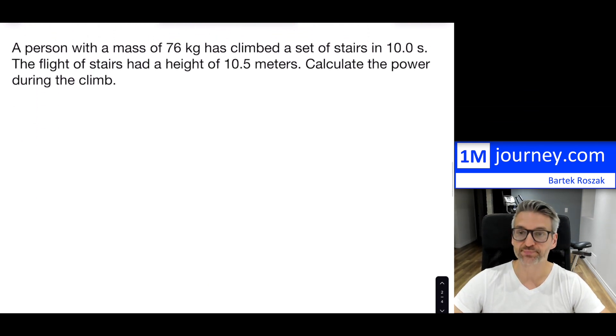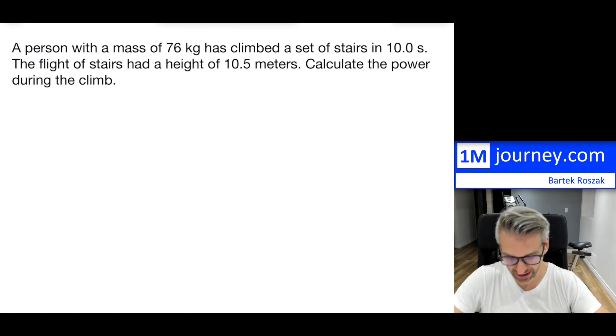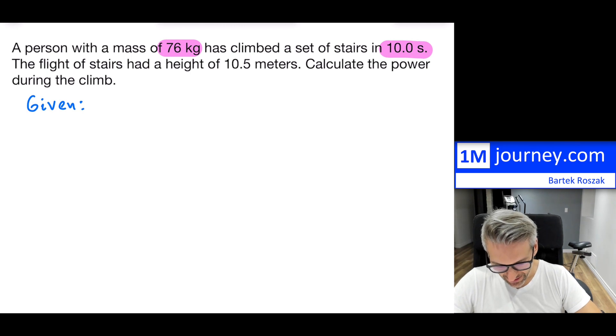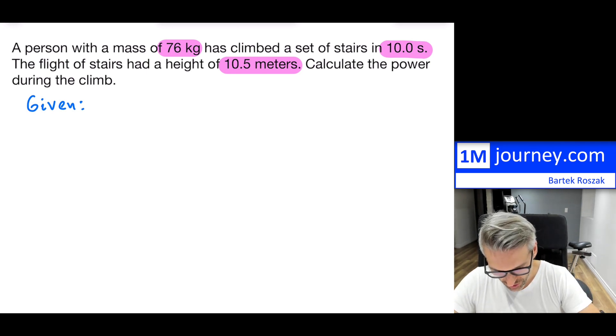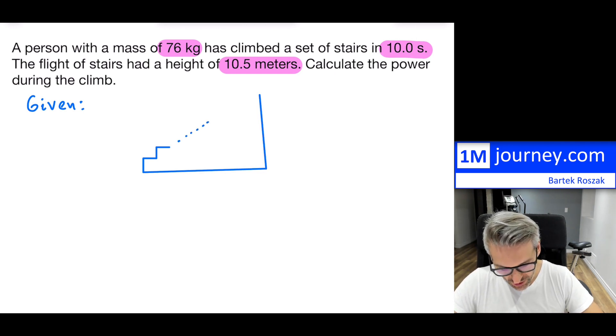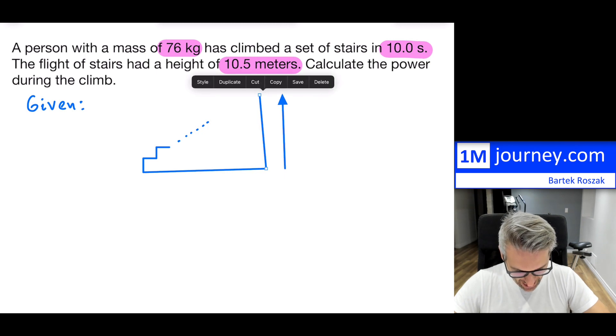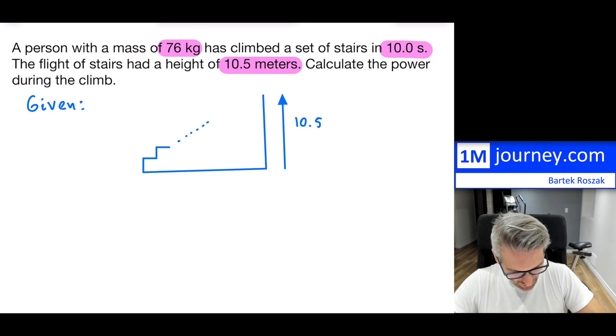Here's another example. A person with a mass of 76 kilograms has climbed a set of stairs in 10 seconds. Let's write all the given information. We have the mass, the time it took this person, and the flight of stairs had a height of 10.5 meters. This 10.5 meters, your flight of stairs, you're gonna have your stairs climbing up. When they're saying this is 10.5, I'm gonna assume that this is my vertical height.